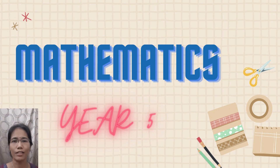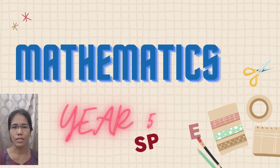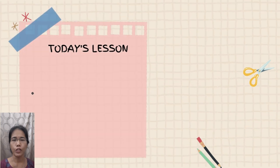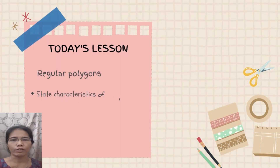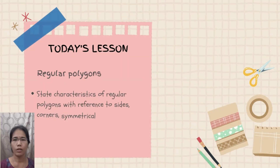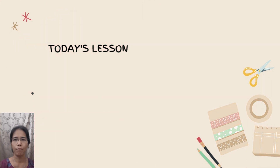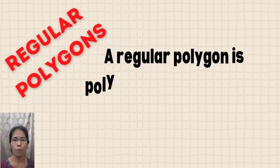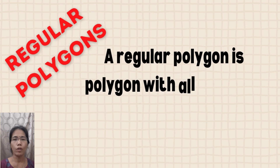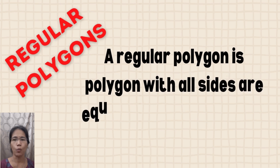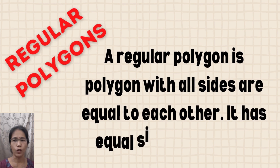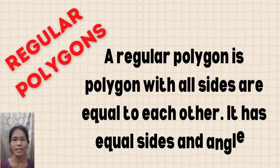Hi everyone, let's start a new topic today: regular polygons. You need to know the characteristics of regular polygons. A regular polygon is a polygon with all sides equal to each other. A regular polygon has equal sides and angles.